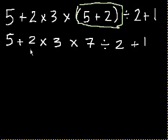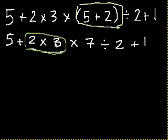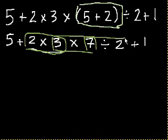So all the places where we have multiplication, we could do 2 times 3 first. We could do 3 times 7 first, or we could do 7 divided by 2 first. And I'll leave it up to you as an exercise to prove to yourself it doesn't matter which one of these we do first.